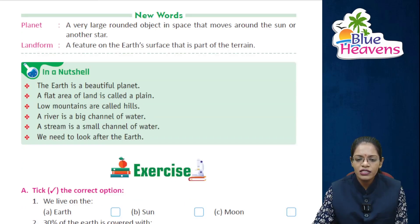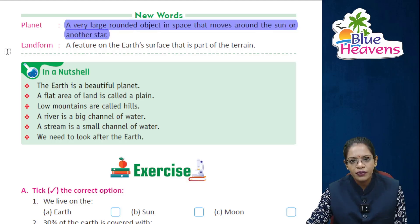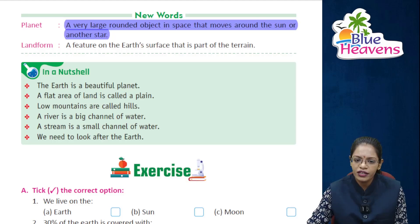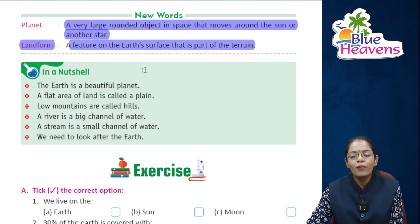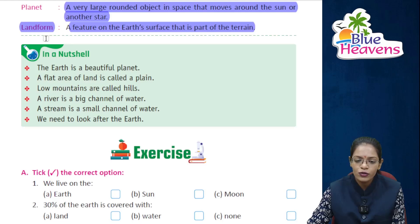New words: Planet — a very large rounded object in space that moves around the sun or another star. Landform — a feature on the Earth's surface that is part of the terrain; it describes the surface characteristics.